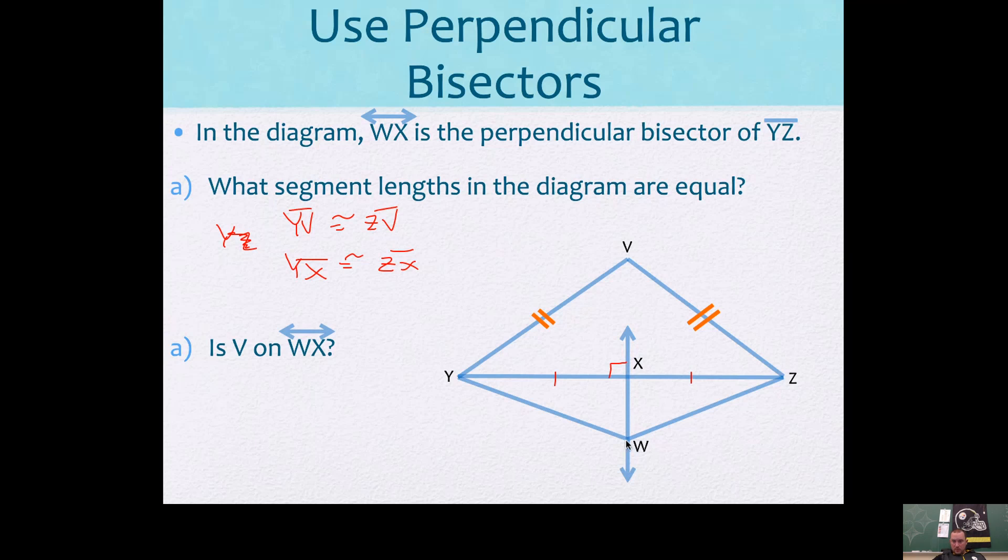Also, notice how this point W is on the perpendicular bisector. That means W is equidistant from the endpoints of the segment. So YW is congruent to segment ZW as well.